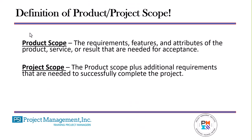We have two levels of scope. We have product scope — the requirements, features, and attributes of the product, service, or result that is needed for acceptance. What am I going to accept? What is my product going to include? Then we have the project scope, which is broader. The project scope is the product scope plus any additional requirements needed to successfully complete the project, taking on a broader sense than the product scope itself.